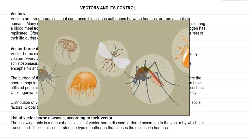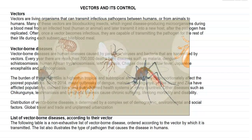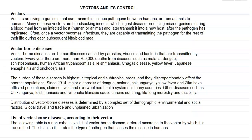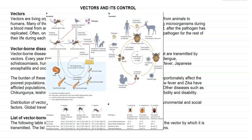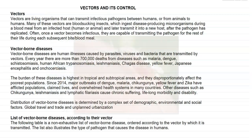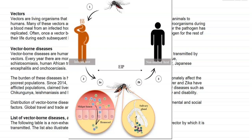In this screencast video lecture, we will see about vectors and how they can be controlled in order to reduce disease spread. Vectors are living organisms that can transmit infectious pathogens between humans or from animals to humans. Most of these vectors are blood-sucking insects that can ingest disease-producing pathogens during a blood meal from an infected host, such as an infected human or animal, and later transmit the pathogen to a new host after a period in which the pathogen replicates inside the vector itself.